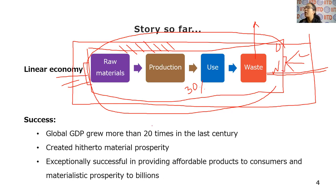Where is that electricity coming from, and what is the carbon footprint of that electricity? If you have set up solar panels on the roof of your factory and are meeting even 30% of your total electricity requirement through solar rooftop, you are bringing down your emissions by 30% or more. More and more companies are doing this now.